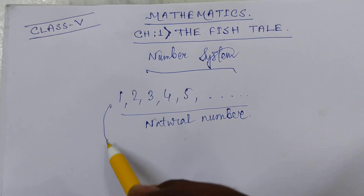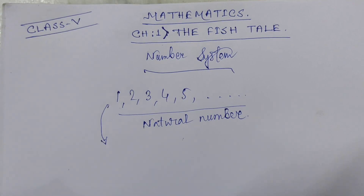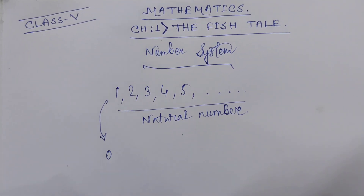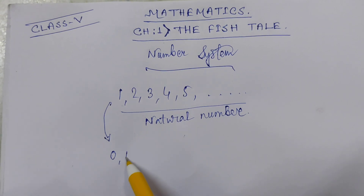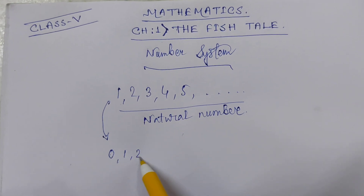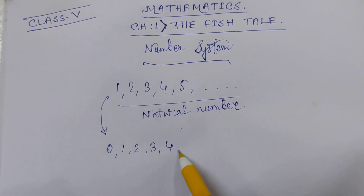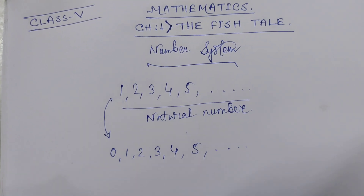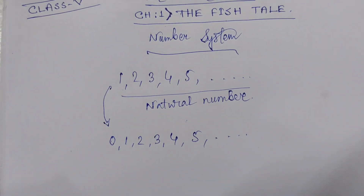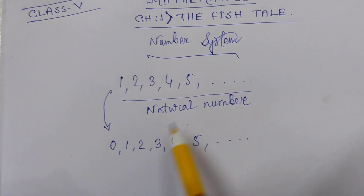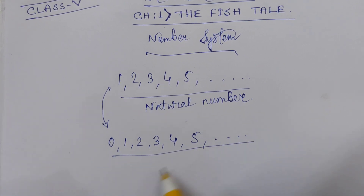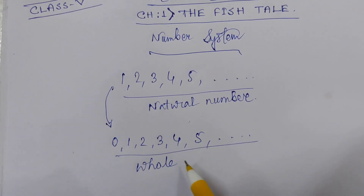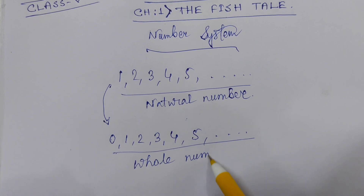Now, with the set of natural numbers, if I add 0 here — so 0, 1, 2, 3, 4, 5... up to infinite — the set of natural numbers turns into the set of whole numbers.